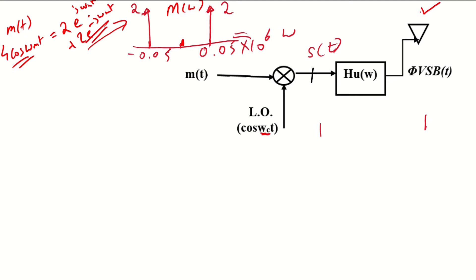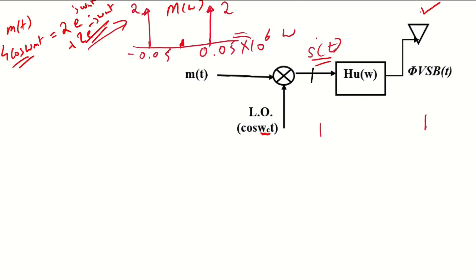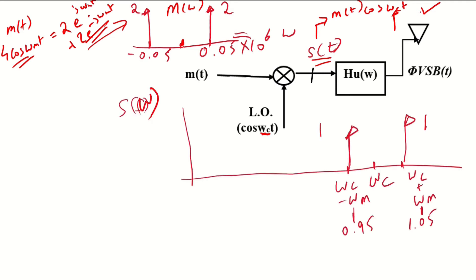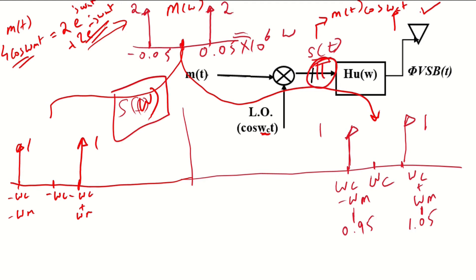Next, cos(ω_c t) operates at 1×10^6 radians per second. So s(t) is simply m(t) multiplied by cos(ω_c t), heterodyning the message signal to the higher frequency ω_c. The spectrum S(ω) shows M(ω) shifted to +ω_c and −ω_c, giving delta functions at −ω_c+ω_m, −ω_c−ω_m, and ±ω_c, each with strength 1.